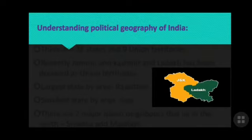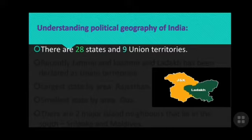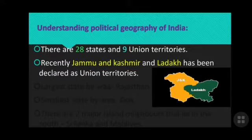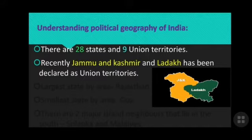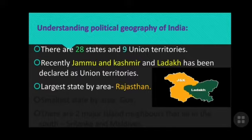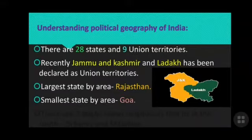Now we are going to understand the political geography of India. India has 28 states and 9 union territories. Recently, Jammu and Kashmir and Ladakh have been declared union territories — earlier, Jammu and Kashmir was a state. The largest state by area is Rajasthan, and the smallest state by area is Goa.